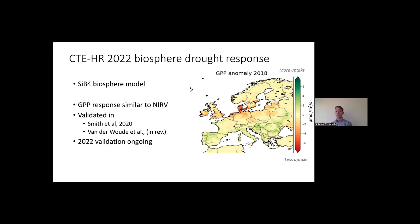We've also done some validation in Smith et al., the 2020 paper I already talked about, and in the Van der Woude et al. paper, which is currently in review. We are also doing a validation for 2022, and that is still ongoing. So now we know what we have. We have this biosphere model. Let's talk about some droughts.